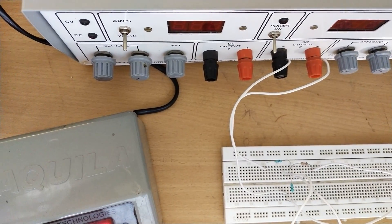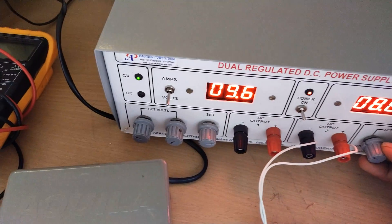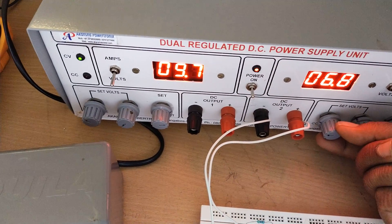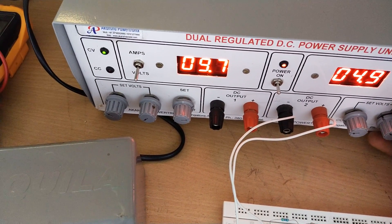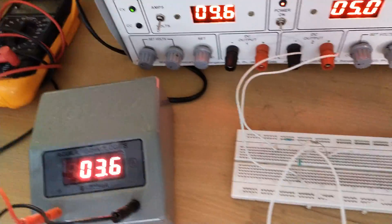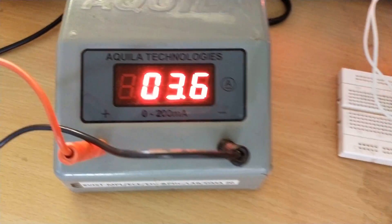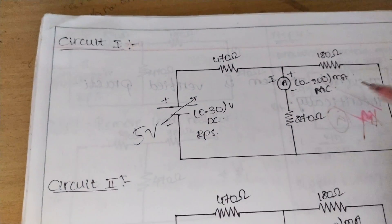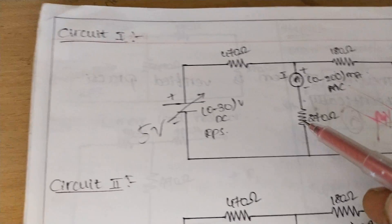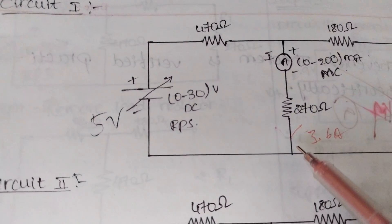We switch on and supply 5 volts to the circuit, since the 10 volt source is already short-circuited here. The current flowing through the 270 ohm resistance reads 3.6 milliamps. So when 5 volts is applied with the 10 volt source deactivated, the current through the 270 ohm resistance is 3.6 milliamps.